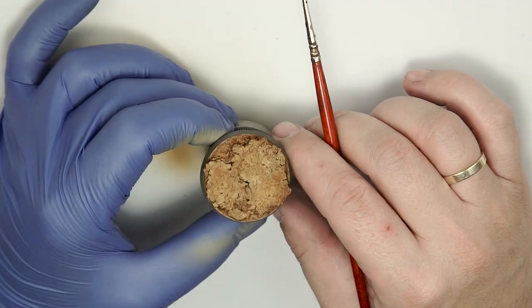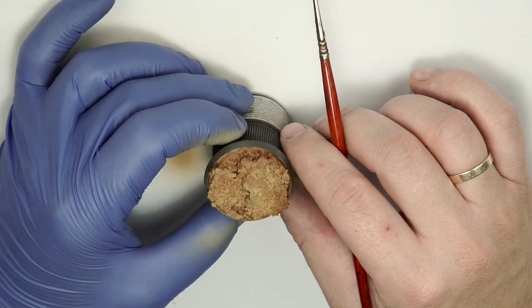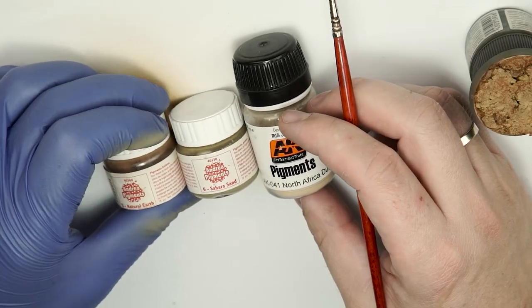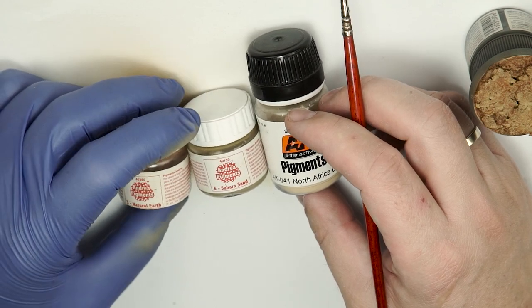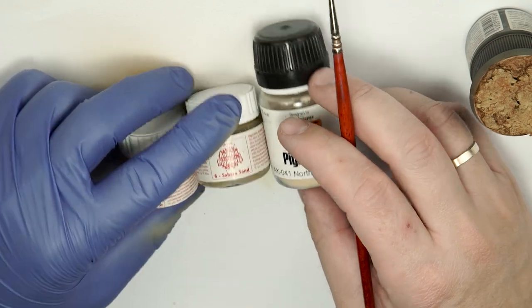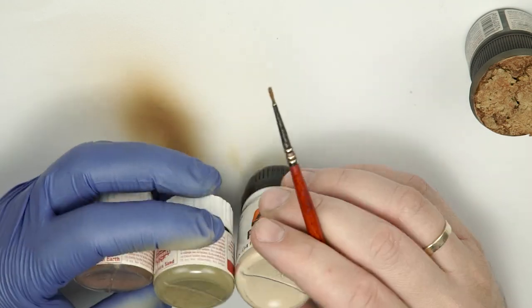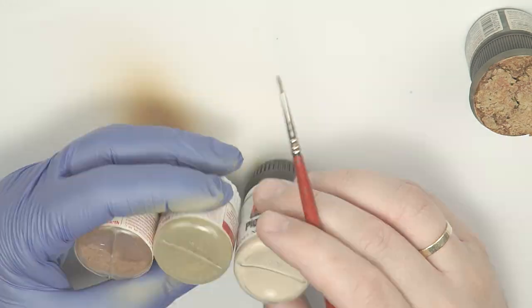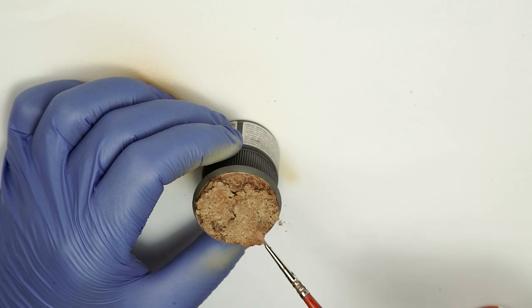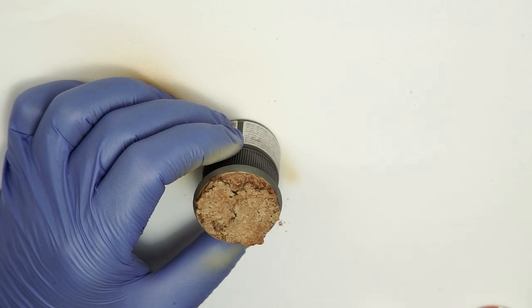After the wash is completely dry it is time to add some pigments. For this I am going to use three different earth desert tones: a dark, a mid and a light one. First I am going to sprinkle the dark tone all over the base.